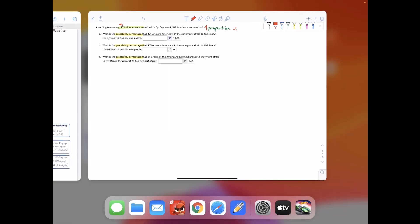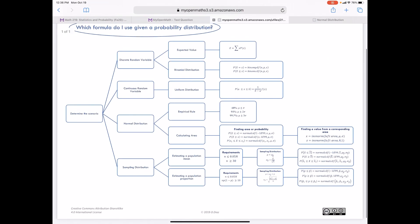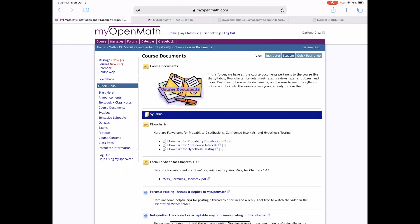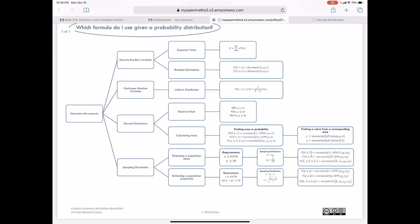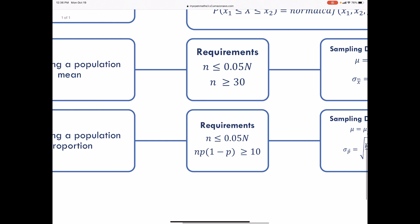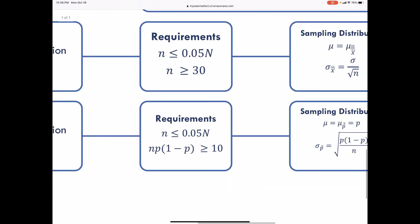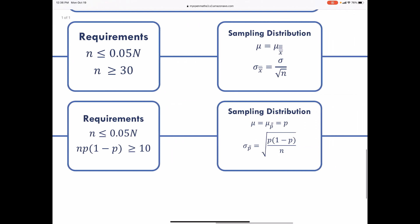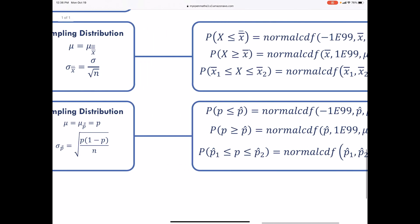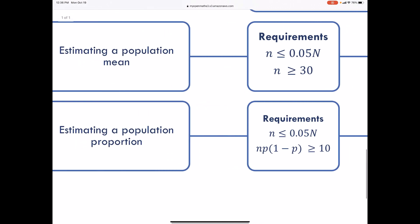If we go to the flowchart for probability distributions — found in the course documents of the My Open Math course — under sampling distributions, if we're estimating a population proportion, there are two requirements we must satisfy: the sample size must be less than or equal to 5% of the population, and n times p times (1-p) must be greater than or equal to 10. Once those are satisfied, we can begin the sampling distribution and find the probability.